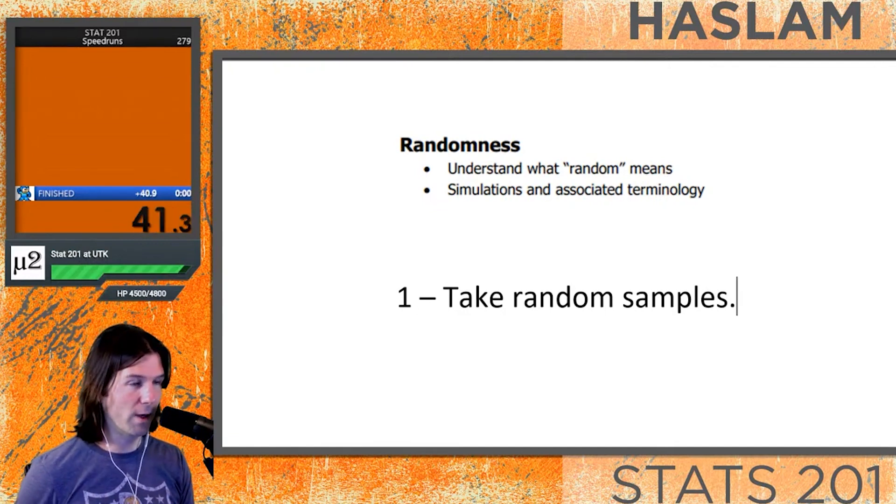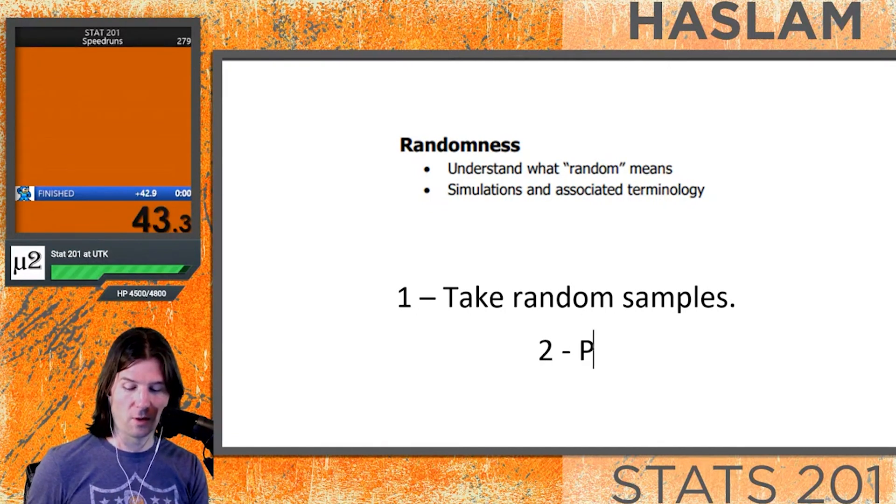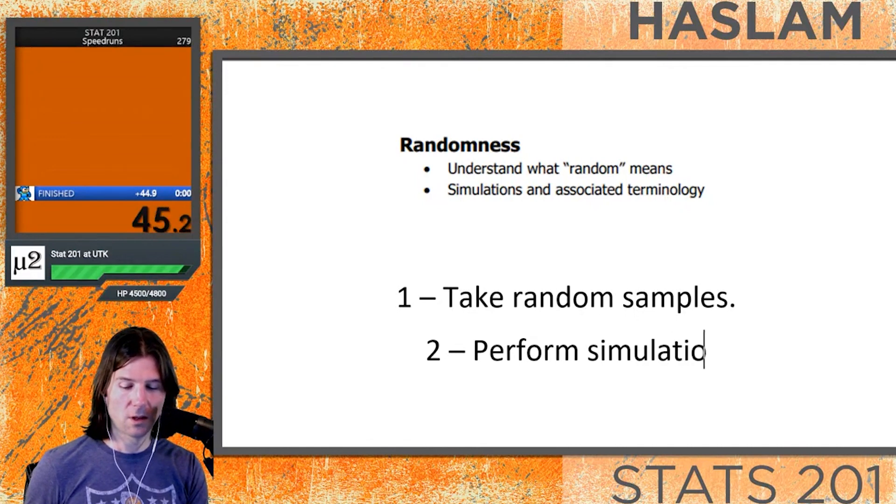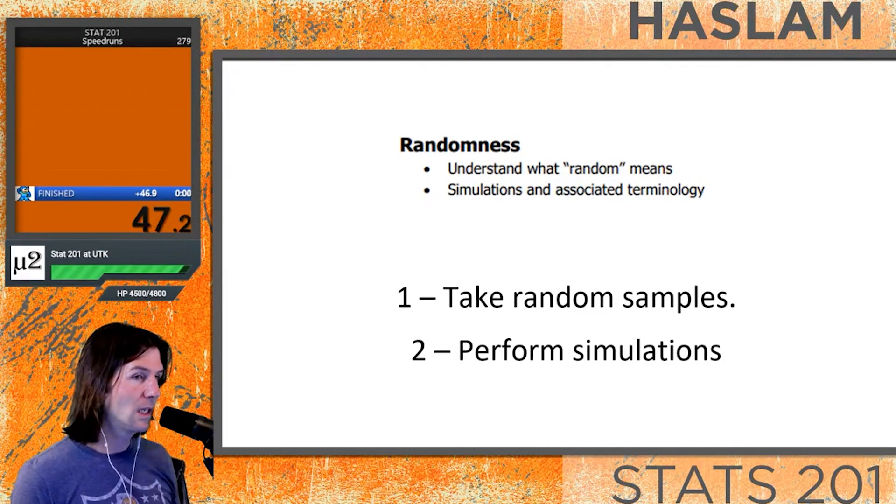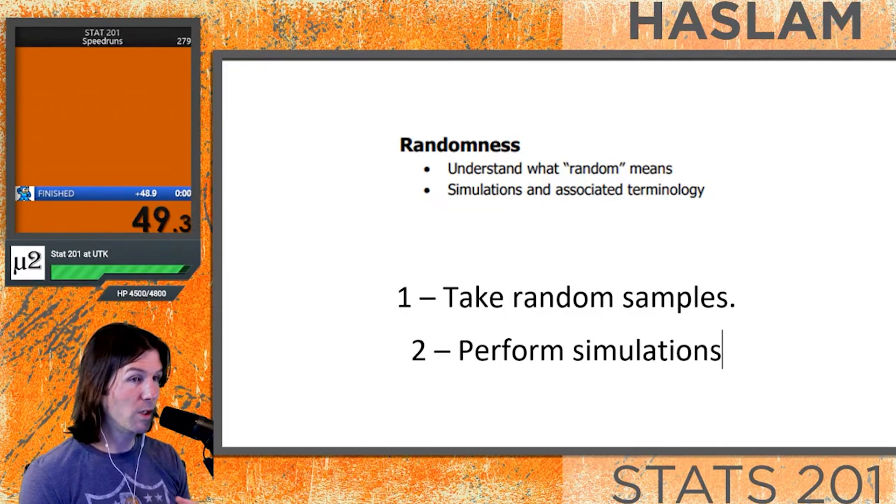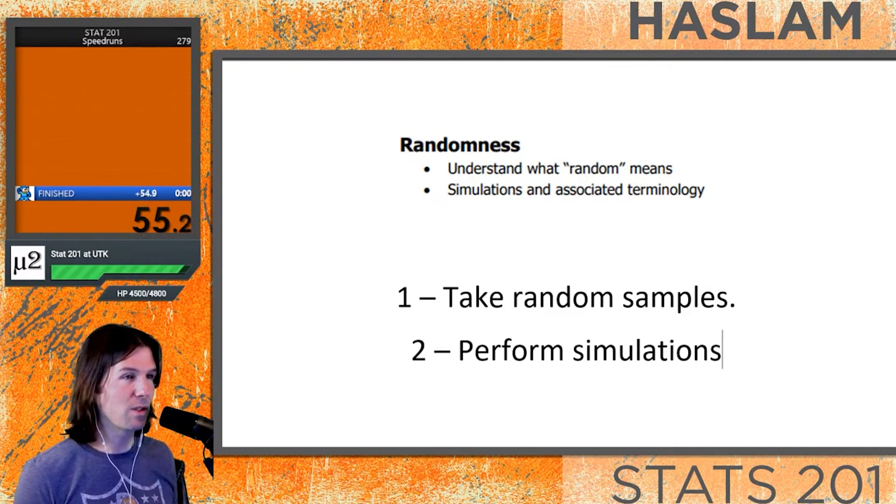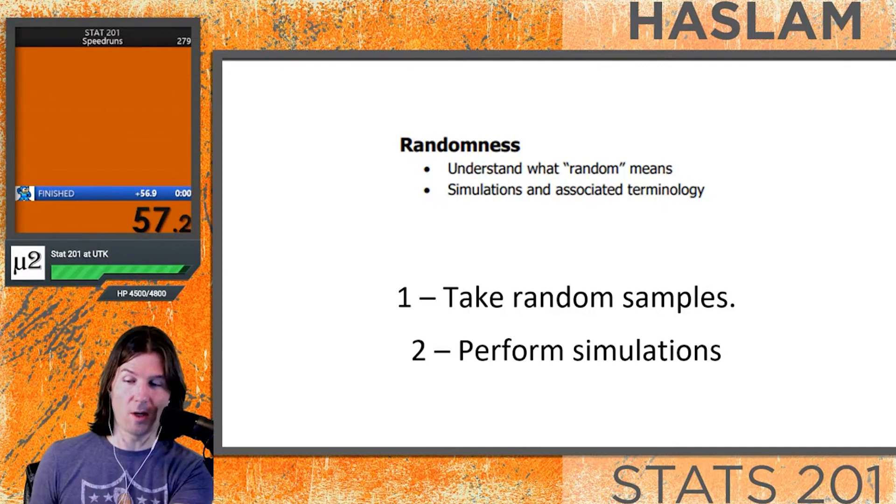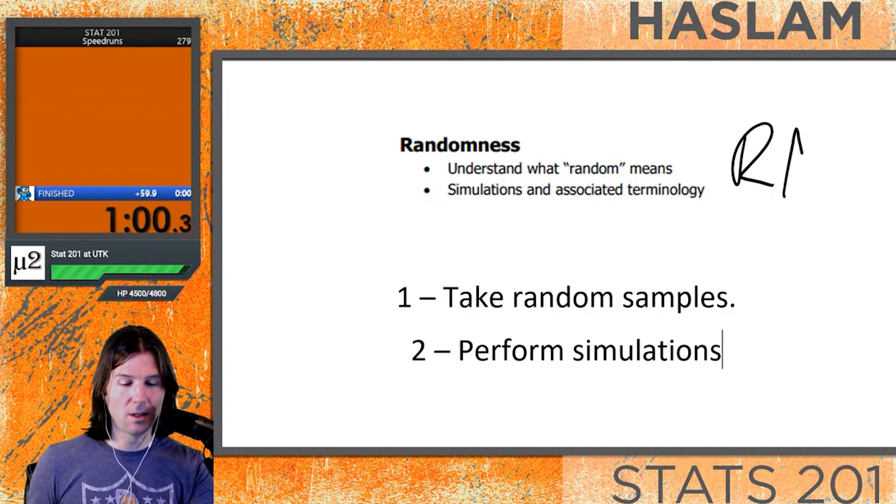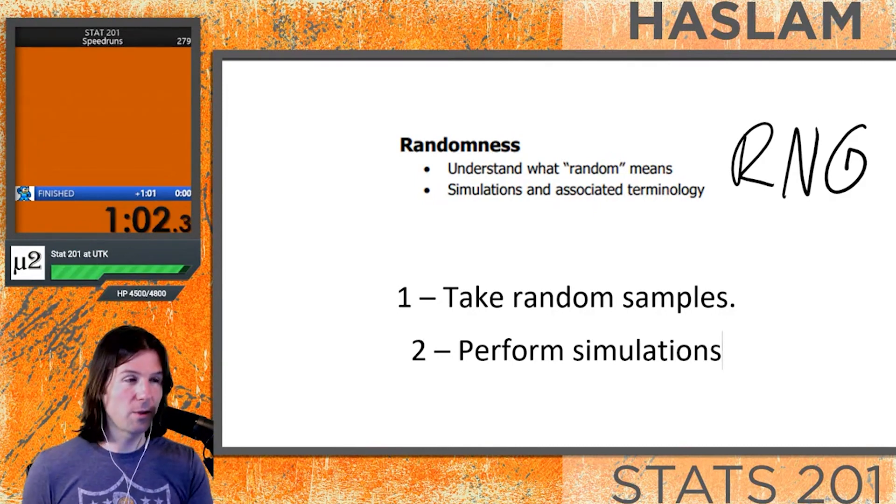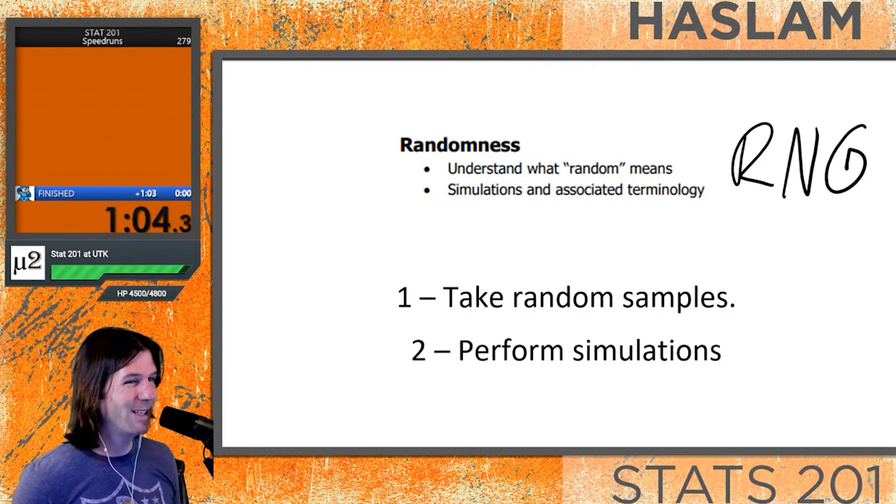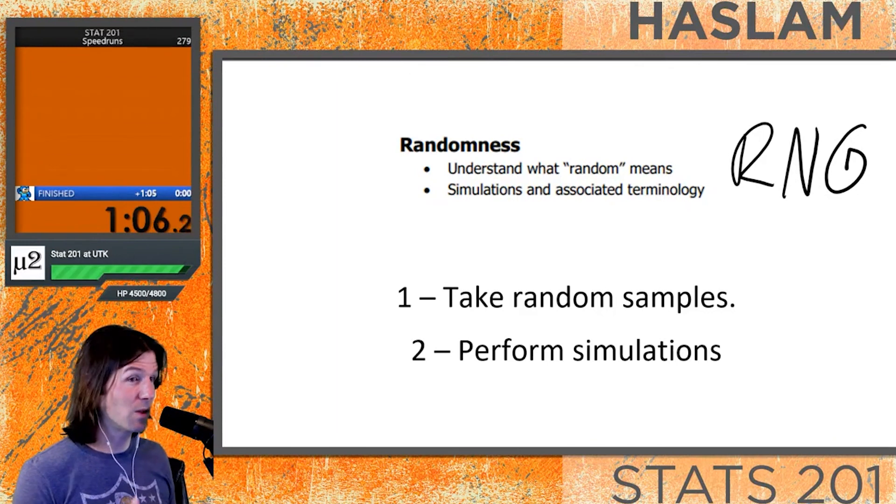We can also perform simulations. What is a simulation? A simulation is a way of taking a real world event and using randomness to generate it. We see this all the time, especially in video games. You may have heard the term RNG. RNG stands for random number generation.